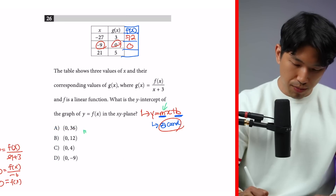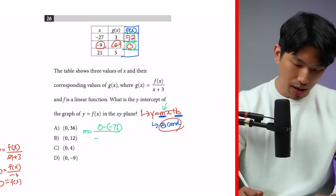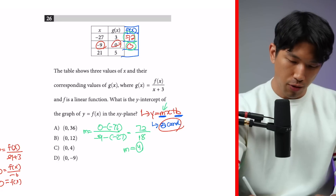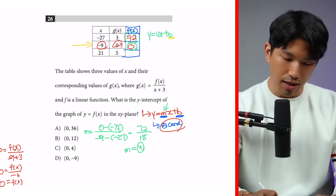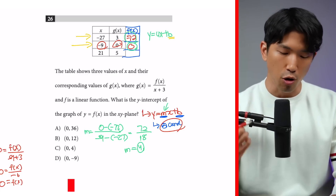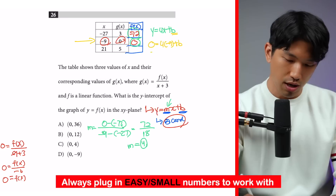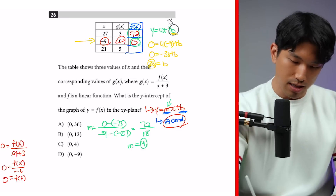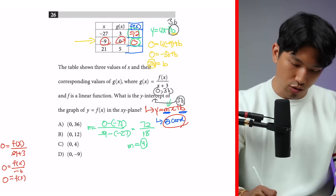With the two coordinates in place, we find the slope: y2 minus y1 over x2 minus x1 equals 0 minus negative 72 divided by negative 9 minus negative 27, which is 72 divided by 18, so slope equals 4. Our equation is y equals 4x plus b. Plugging in the second coordinate where y equals 0 and x equals negative 9 gives 0 equals negative 36 plus b, so b equals 36. Our y-intercept is positive 36, at coordinate (0, 36). The answer is choice A.